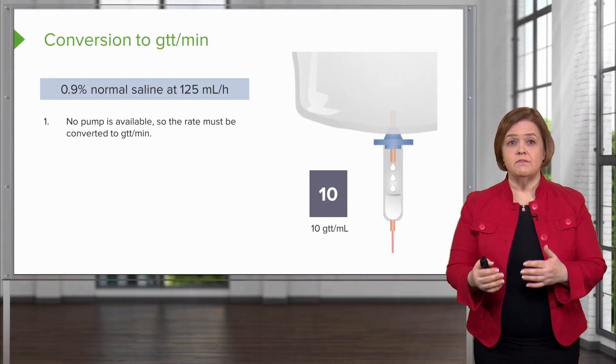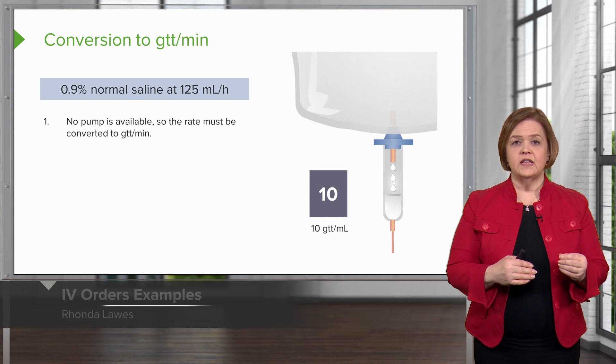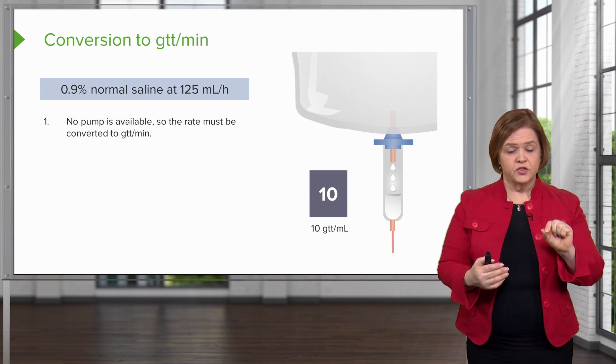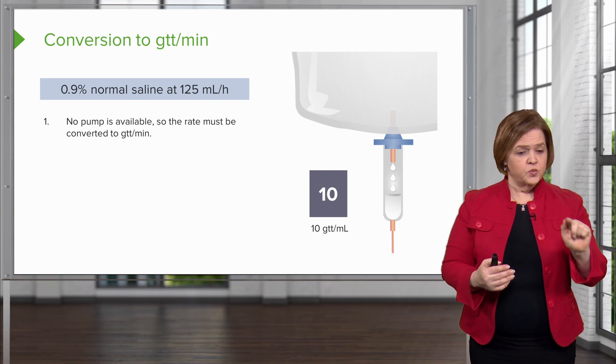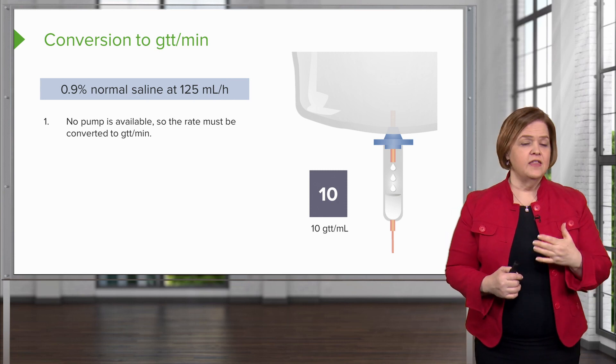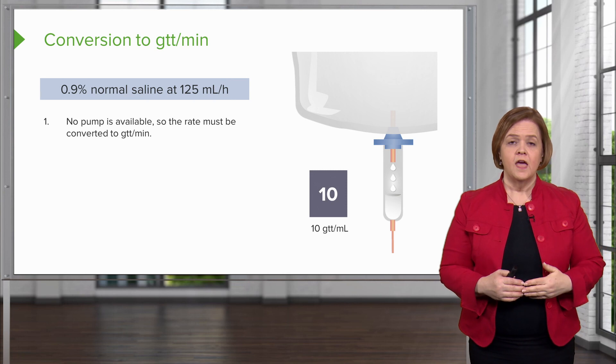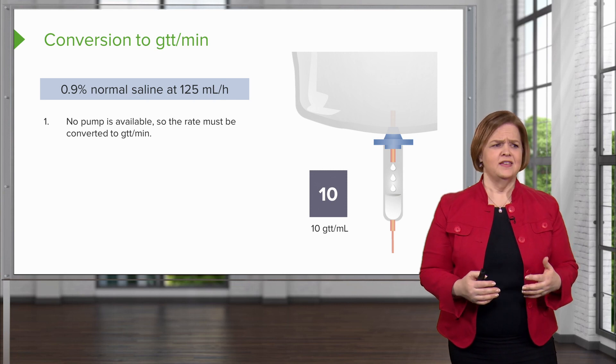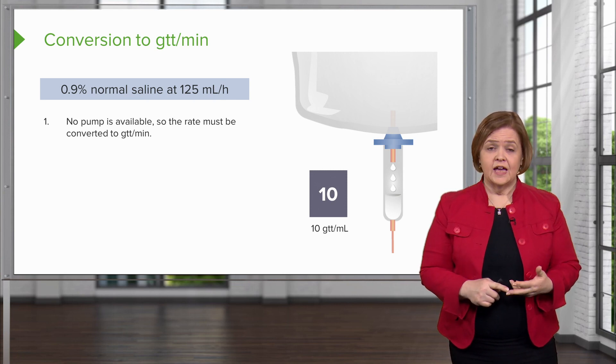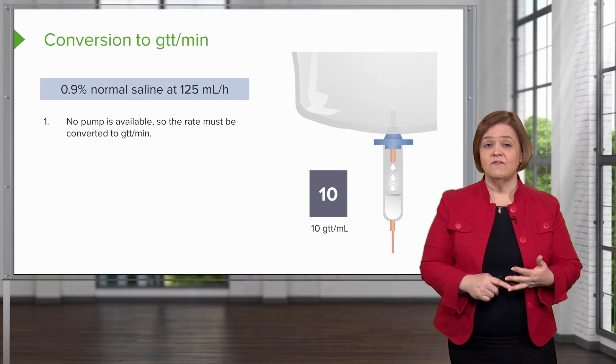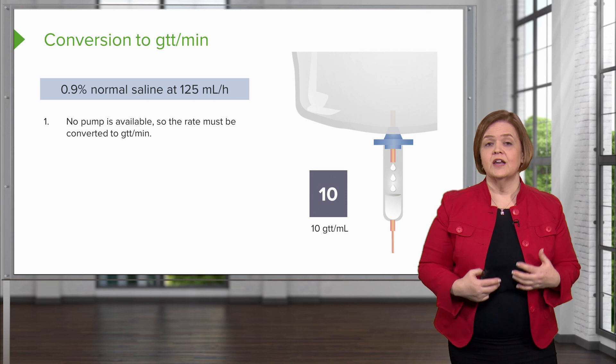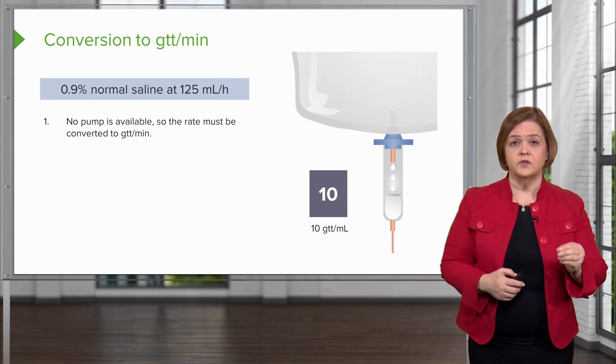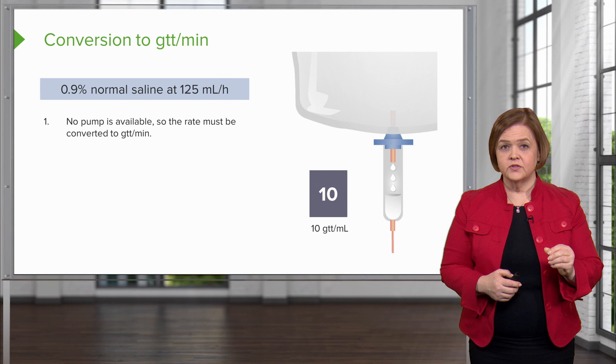Now let's talk about conversion to drops per minute. We've got normal saline at 125 mL per hour. If you had a pump, you'd set it to 125 mL per hour and the pump would maintain that rate. But we want you to be prepared in case there isn't a pump available. This can happen in hospitals, certain settings, and emergencies. So no pump is available - the rate must be converted to drops per minute, gtt per minute.